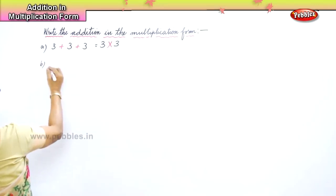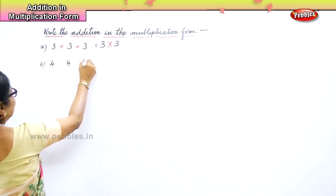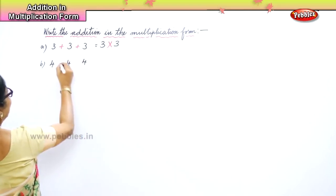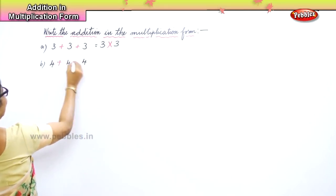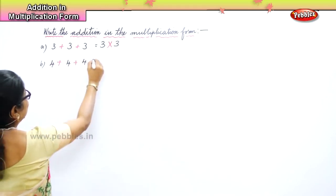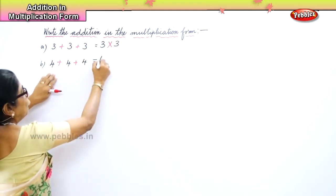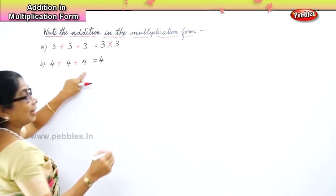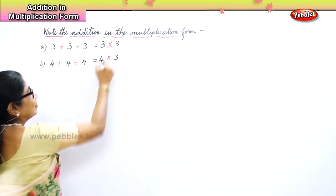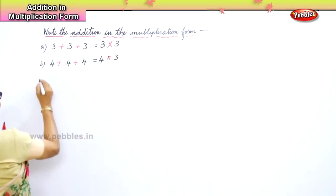Next, B. 4 plus 4 plus 4 — now write it in the multiplication form. You will write 4, and count: 1, 2, 3. So 4, 3 times.